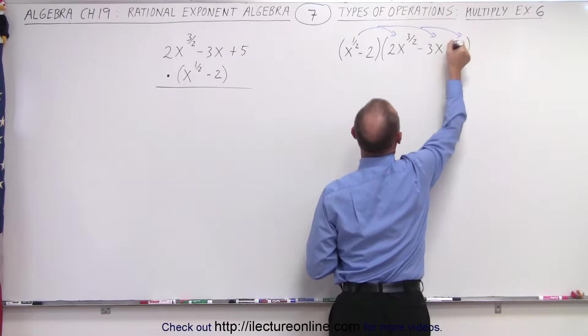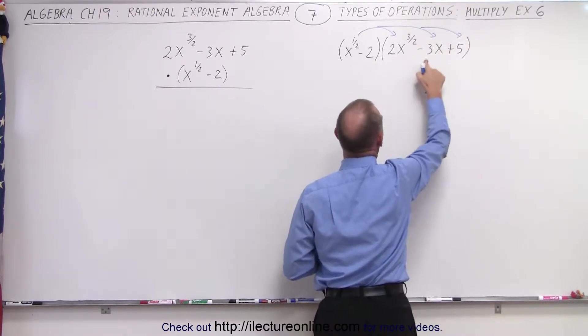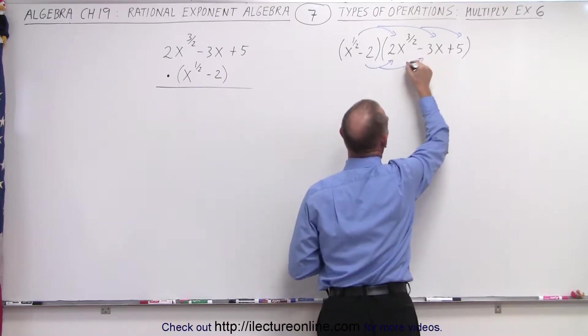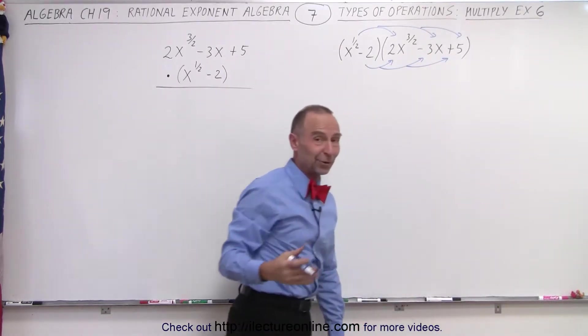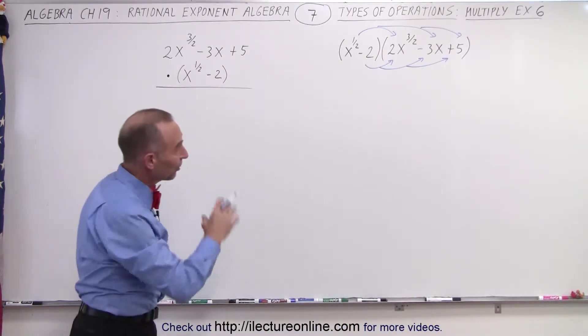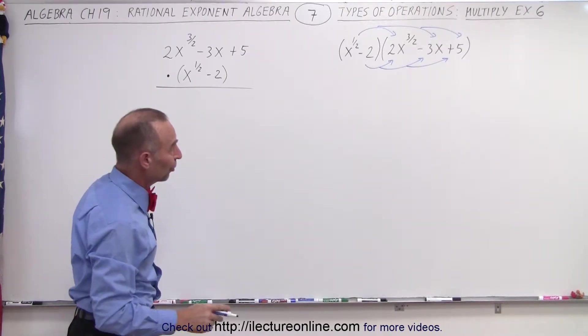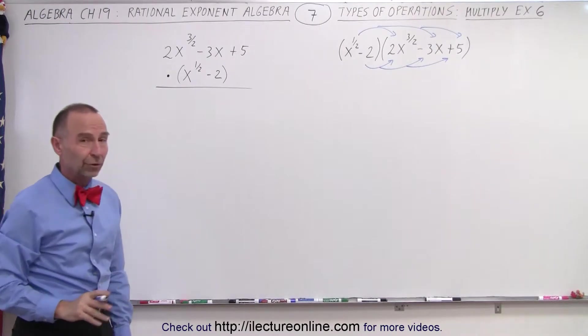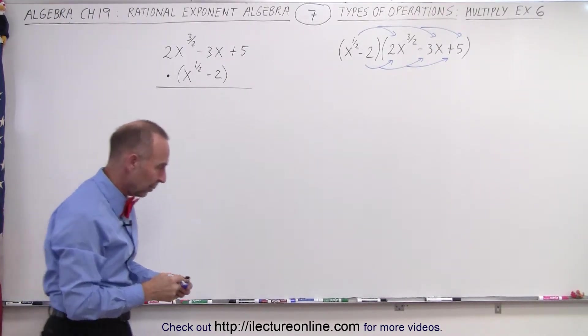There we go, and then we take the second term and again multiply it times each of the terms in the trinomial. I guess it's not the second trinomial because there's only one trinomial and one binomial. But you can see we're going to end up with six terms, or we can solve it like this longhand, and we'll show in just a moment how to do that. Let's do it both ways and see what we get.